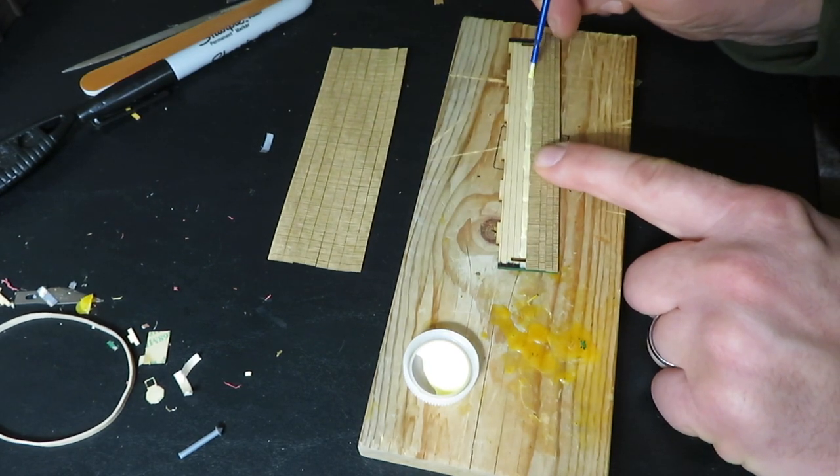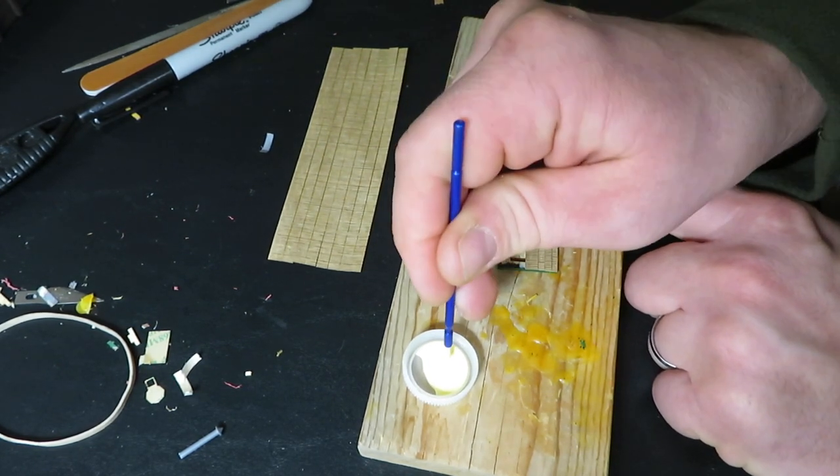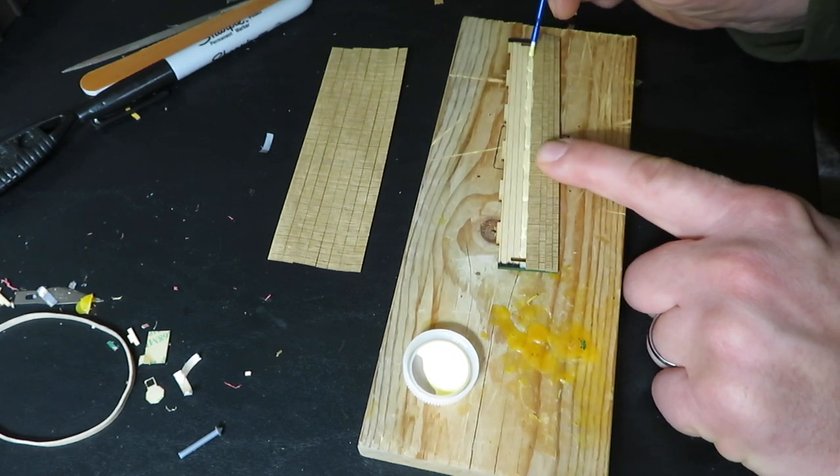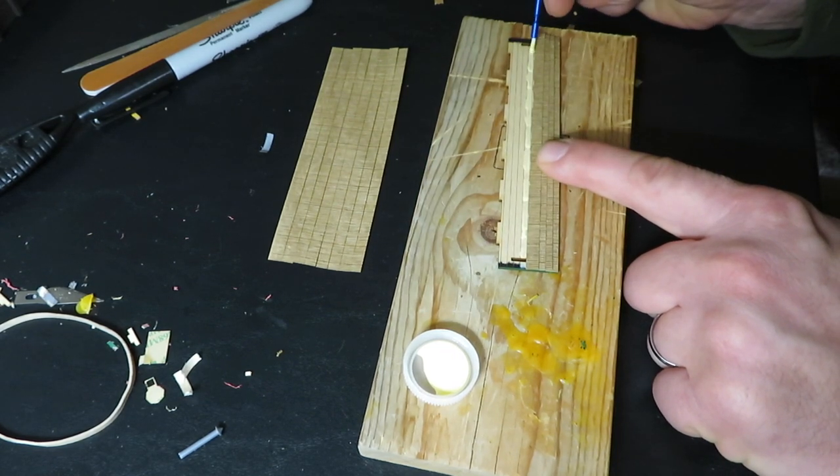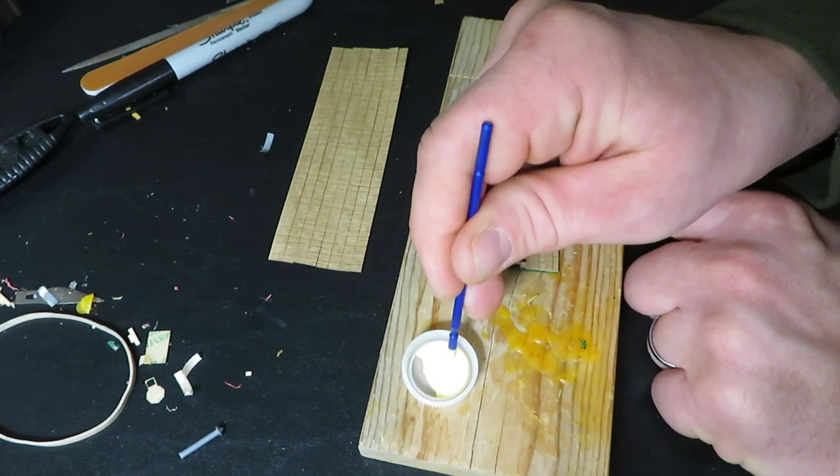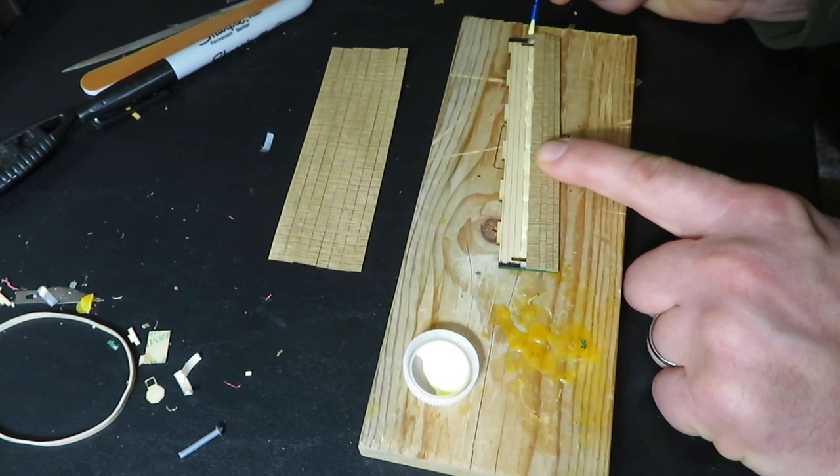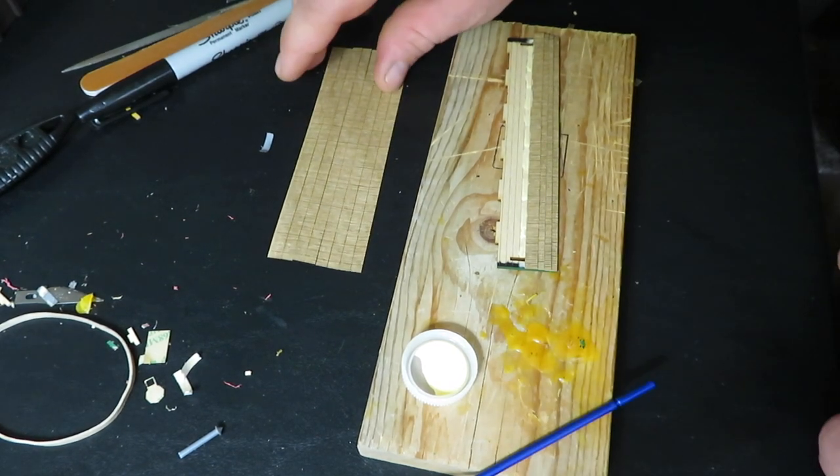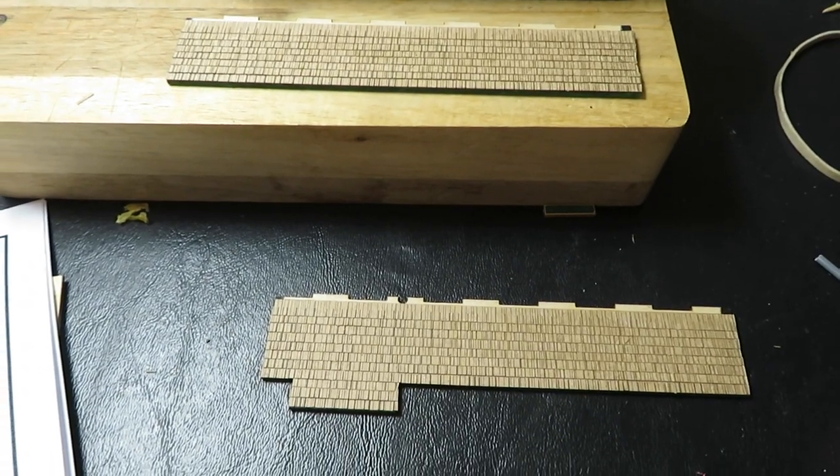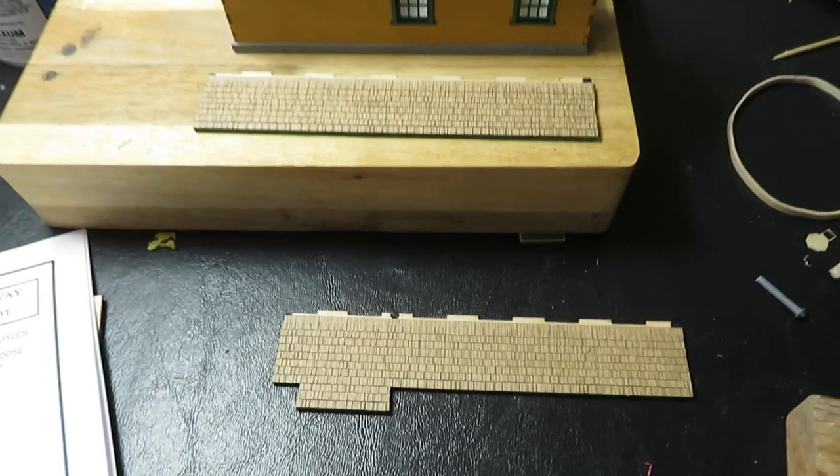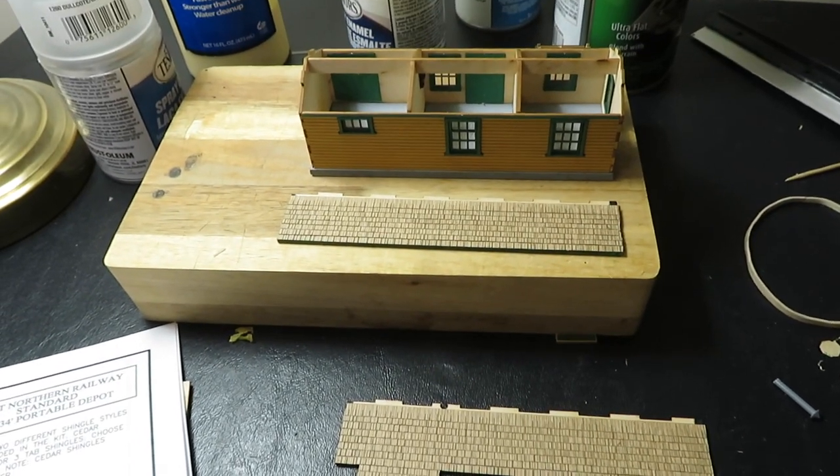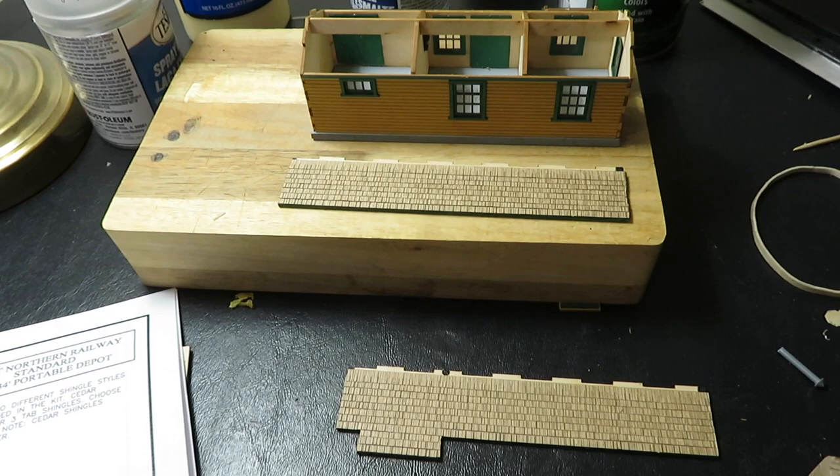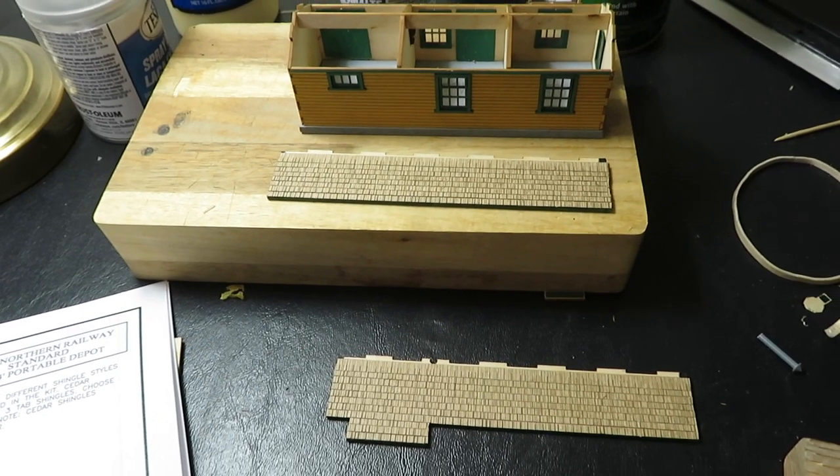I do notice as I get further along, I think the roof section picks up some moisture from the glue and does start to bow a little bit, but what I do is once I have all the shingles on, I just weight it down, and then by the time it dries, it's flat again. I have both roof sections mostly shingled. I'll go ahead and glue them onto the structure, and then I'll be able to finish the shingling and the ridge cap.